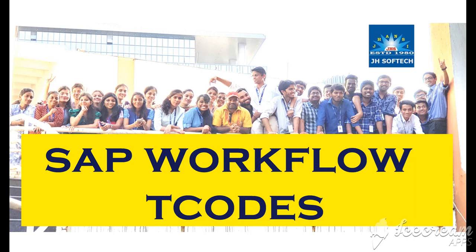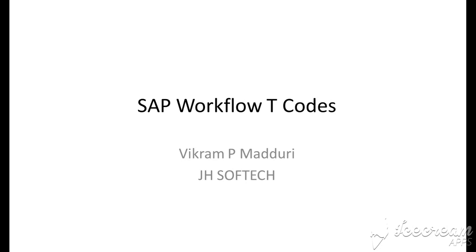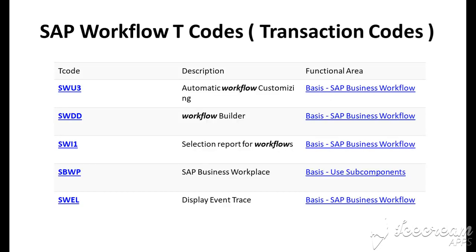SW U3 is the transaction code for automatic workflow customizing. SW DD is for Workflow Builder. SW I1 is for selection report for workflows. SBWP is for SAP Business Workplace. SW EL is for display event trace.